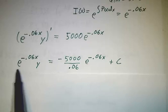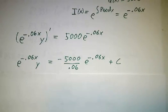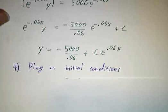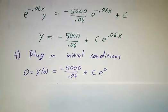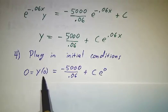So this is the general solution. To figure out the constant, we have to plug in our initial conditions. So initial conditions where at time 0, there was no money there.